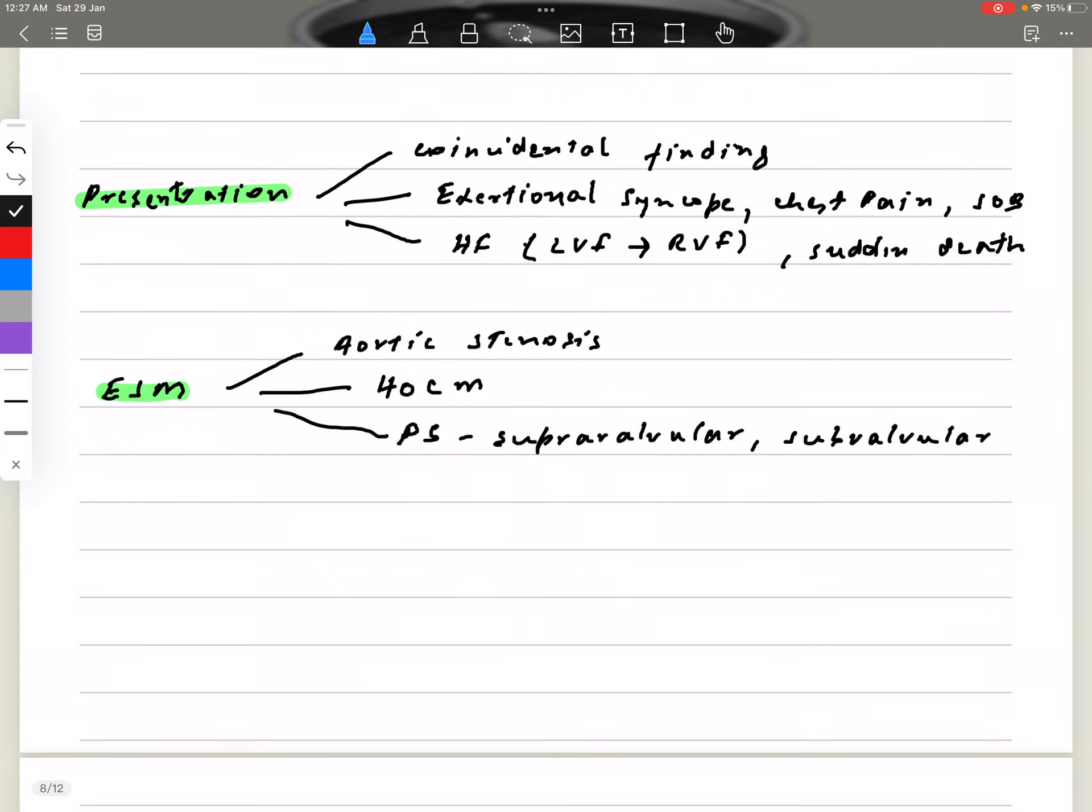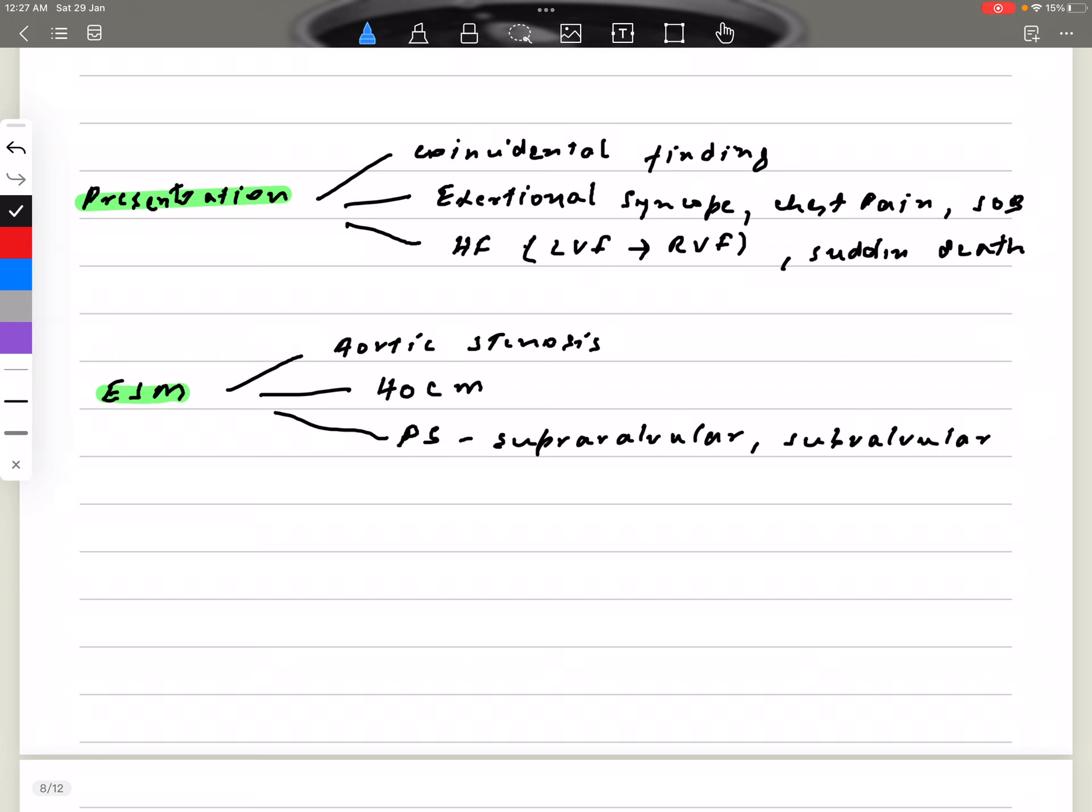What about the ejection systolic murmur? You can hear the differential diagnosis. You can hear ejection systolic murmur in aortic stenosis, you can also hear in aortic sclerosis. If you see that the second heart sound is not soft and the murmur is not radiating to the carotids, then you can put aortic sclerosis in your differential. Hypertrophic obstructive cardiomyopathy also will present with a systolic murmur.